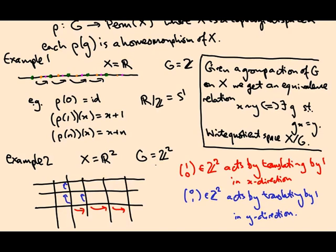In the second example, what do we get? Any of these squares can be translated back to our favorite square. And once we've done that, we still have to identify the opposite edges because they're separated by group elements. So in this case, R² mod Z² equals the two torus. Not surprising because R² is R times R, Z² is Z times Z. So we should get R mod Z times R mod Z, which is S¹ times S¹, which is exactly what the two torus is.